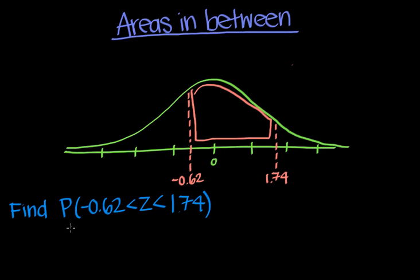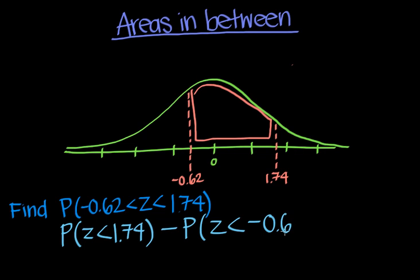So let's also write that out in terms of probabilities. So we want to find the probability that z is less than 1.74, and we want to subtract the probability that z is less than negative 0.62.